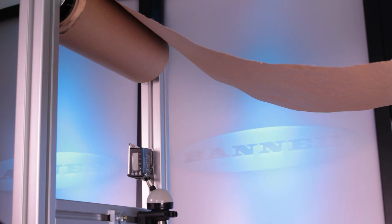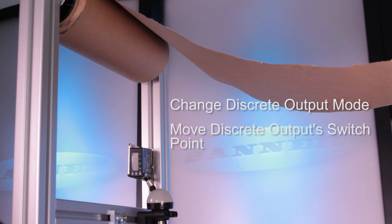This video tutorial will demonstrate how to change the sensor's discrete output mode and use the adjust functionality on the LE550 to move the discrete output switch point without needing to present a target for roll diameter applications.